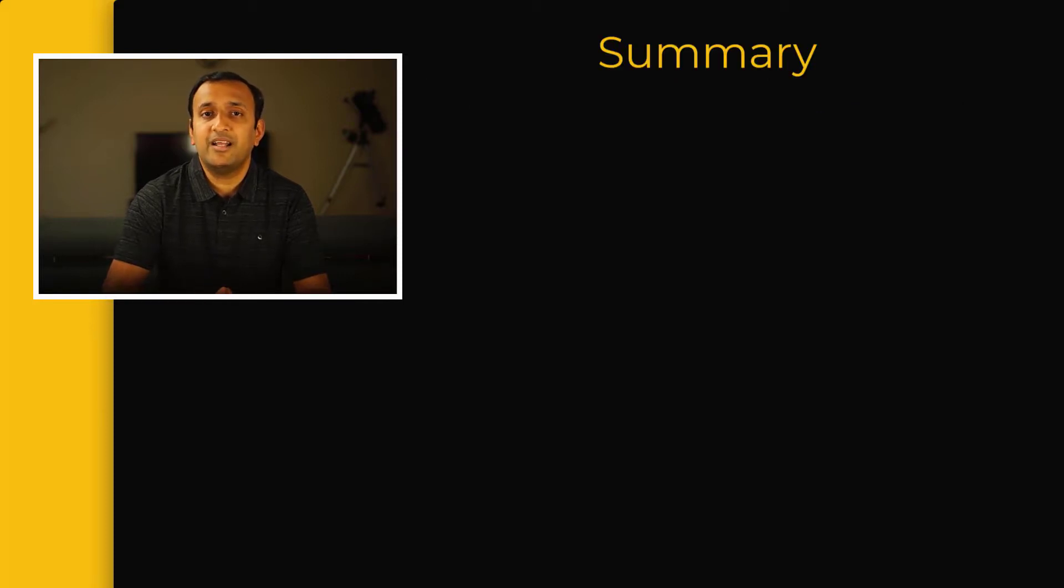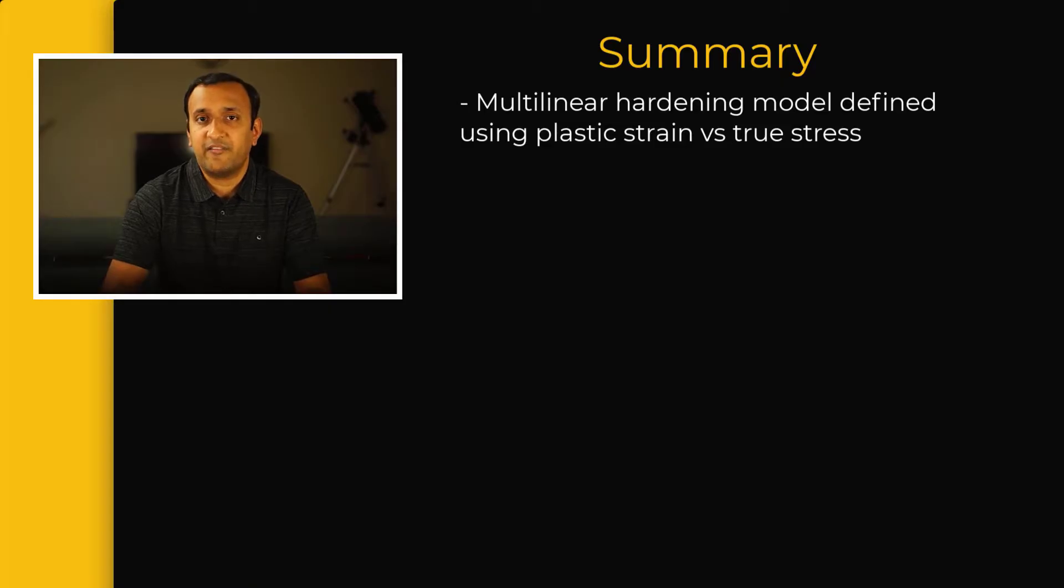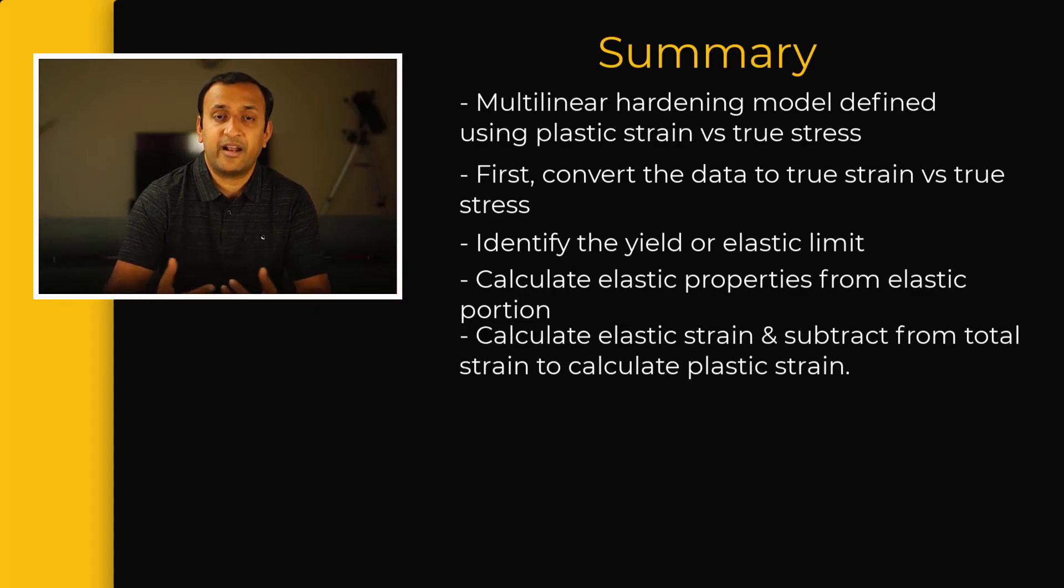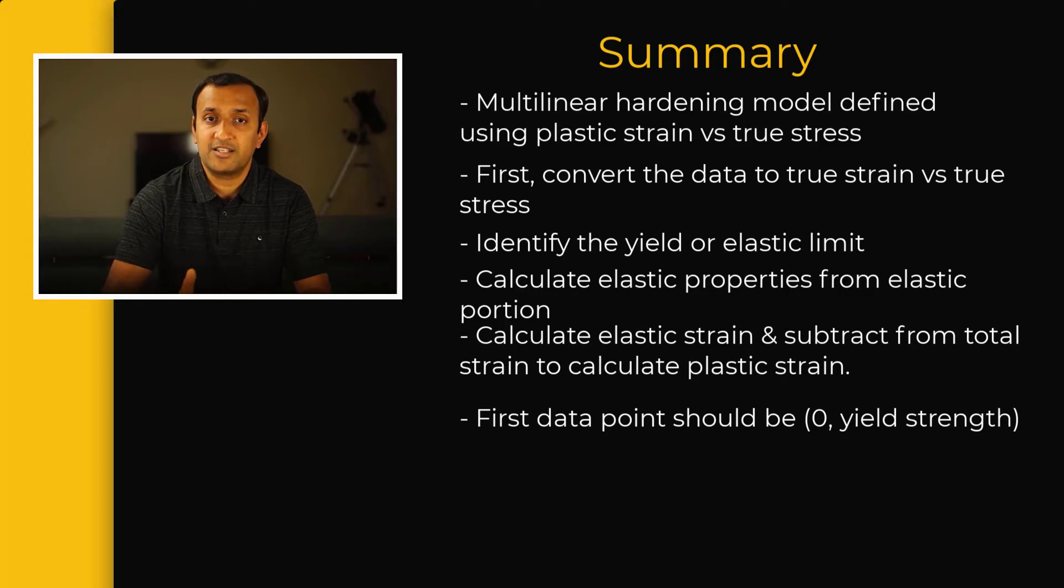In conclusion, the multilinear hardening plasticity model in ANSYS is defined using plastic strain versus true stress data. We extract this information from experimental data by first converting it to true stress and true strain, then identifying the point at which the material begins to yield. Once we do this, we can calculate the elastic properties of the curve using the elastic portion. We can then calculate the elastic strain developed in the material and subtract it from total strain to calculate the plastic strain. This is then input into ANSYS Mechanical to finish the material definition. Remember that the first data point should be zero, yield strength.